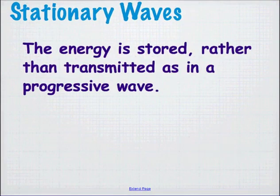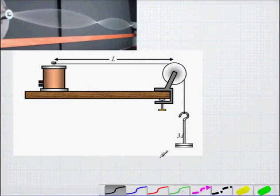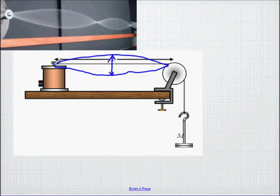The energy is stored rather than transmitted, as in progressive waves. Stationary waves look stationary, so the energy appears to stay in the same place. In class, we did an experiment where an oscillator made a string move up and down, creating standing waves — some curves. This is the fundamental: it oscillates at maximum amplitude in the middle with no oscillation at each end. The antinode is in the middle and the nodes are at each end.